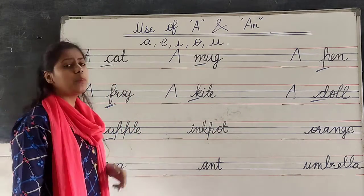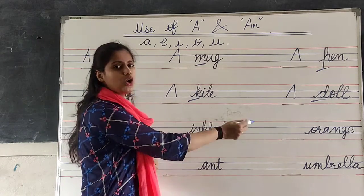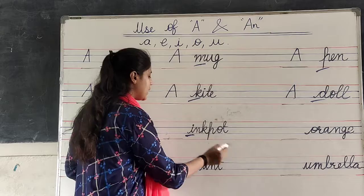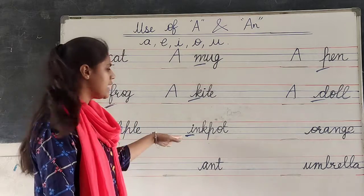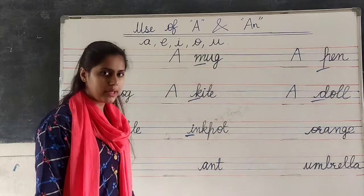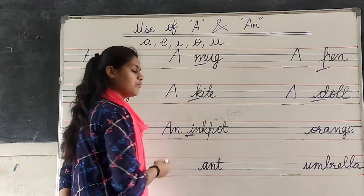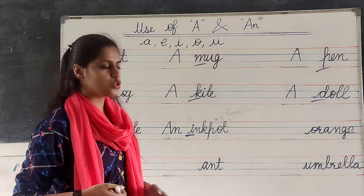Now, inkpot. Inkpot. I, N, K, P, O, T. First letter is I. Is it a vowel? Yes. I. Then we have to write? A, N. An. Okay, students?